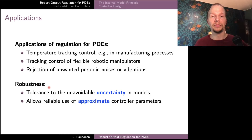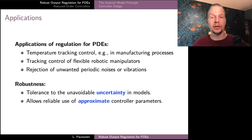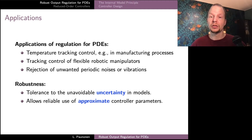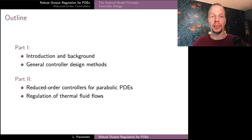The robustness aspect of the controller is important for tolerating model uncertainty, which is inevitable in all applications where we model real-life processes. But as another very important and interesting aspect, robustness also allows us to reliably use approximation techniques when choosing and tuning the controller parameters.